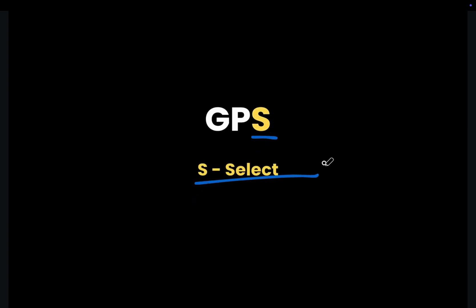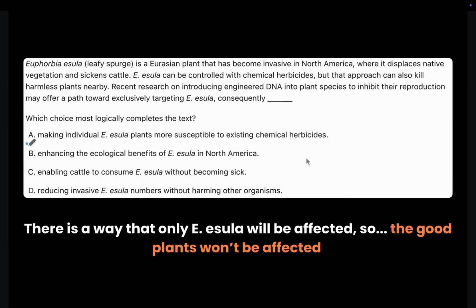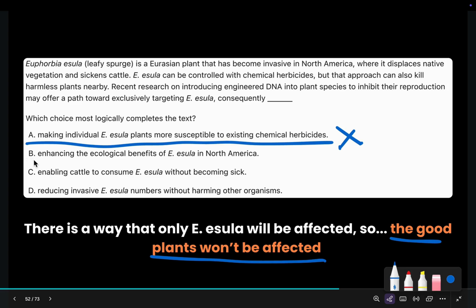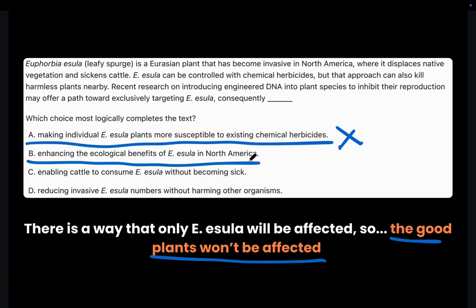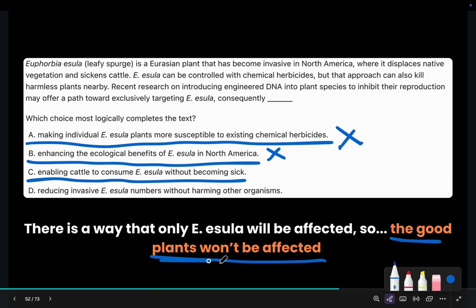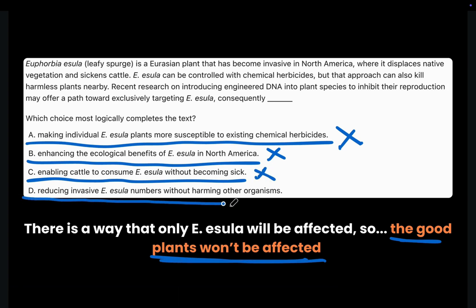Now let's move on to S — Select. We need to select the choice that matches our prediction. Choice A: making individual esola plants more susceptible to existing chemical herbicides. This is wrong because esola can already be affected by those herbicides, and we are looking for a choice that says the good plants won't be affected — so be careful. Choice B: enhancing the ecological benefits of esola in North America. But esola itself is pretty horrible, so this choice is obviously wrong. Choice C: enabling cattle to consume esola without becoming sick. The text does not talk about cattle and we should look for the choice that says the good plants won't be affected. Choice D: reducing invasive esola numbers without harming other organisms. This could be correct because it says that the esola numbers will be reduced without harming the good plants.